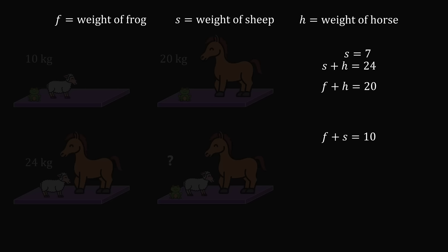Let's take this value and bring it to the equation S plus H is equal to 24. If the combined weight is 24, and we know the weight of the sheep is 7, we know that the weight of the horse must be equal to 24 minus 7, which equals 17.